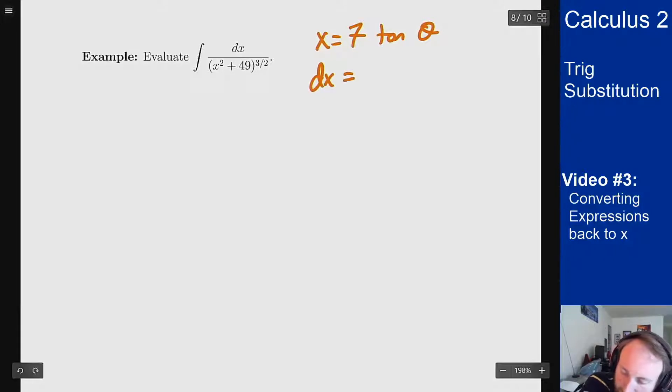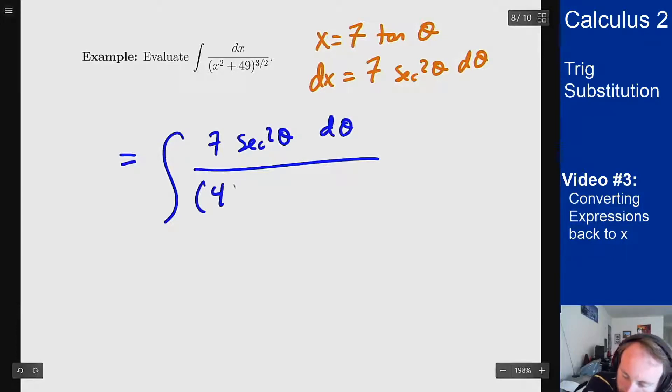and then dx is going to be 7 secant squared theta d theta. Then I can make my substitution. So on top, 7 secant squared theta d theta. On the bottom, I get 49 tangent squared theta plus 49 to the 3 halves.